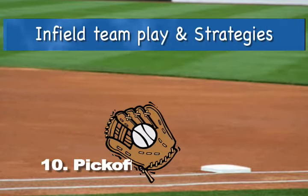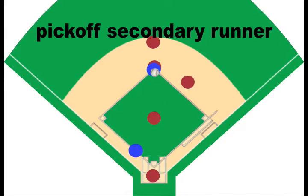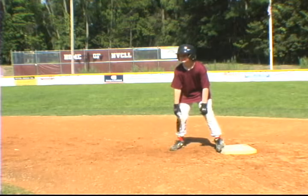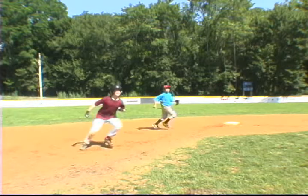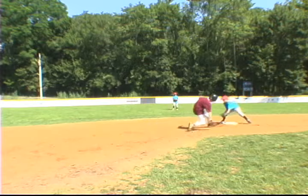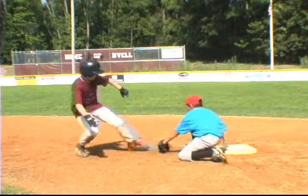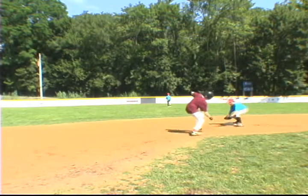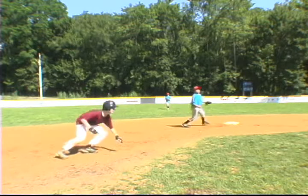Play ten: pick off secondary base runner at second. With runners on second and third, the pitcher pitches out and an attempt is made at the runner at second. As in the previous play with runners on first and second, the same play can work with runners on second and third if the defensive team is in a position to trade an out for a run. This is a much tougher play because of the distance of the throw, but it can also work if practiced and if the coach determines the talent on his team warrants an attempt.